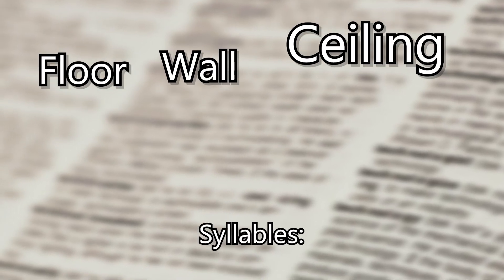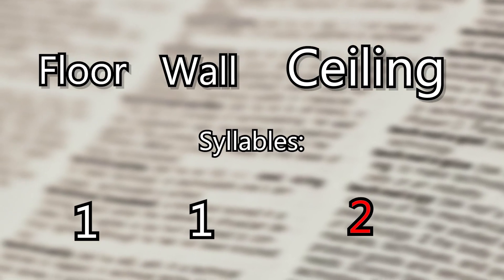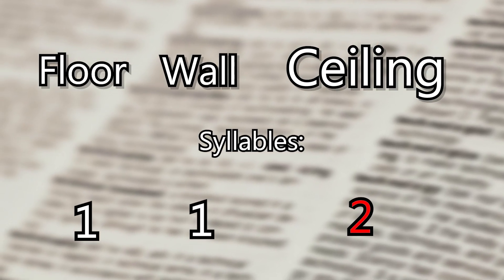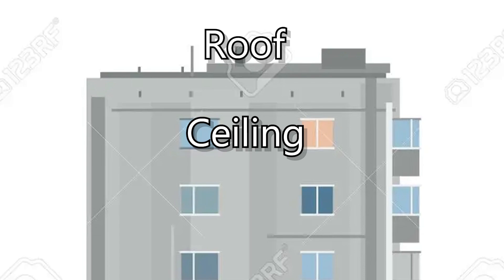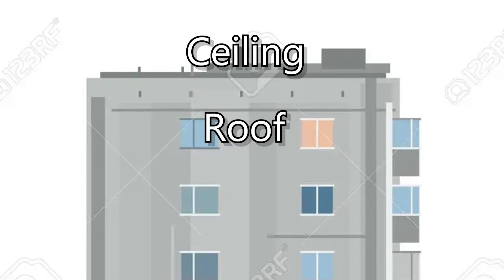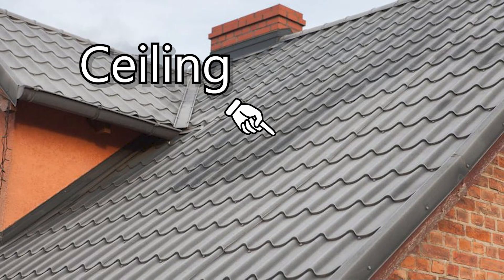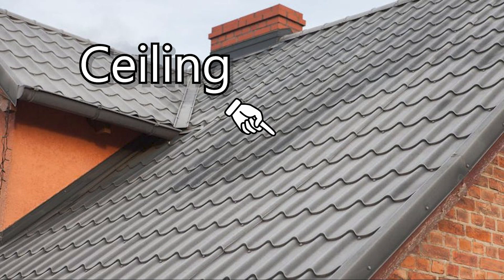If you walk into an empty room, what's there? There's a floor, there are four walls, and a ceiling. I feel like ceiling ruins the consistency of one syllable per word. So to fix that, I'm going to switch roof and ceiling so that we keep that consistency. I think ceiling could work well to represent the roof — or should I say ceiling?